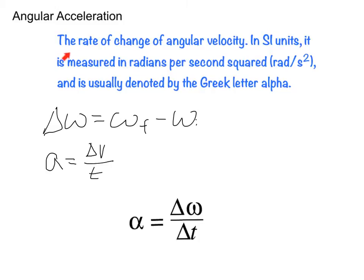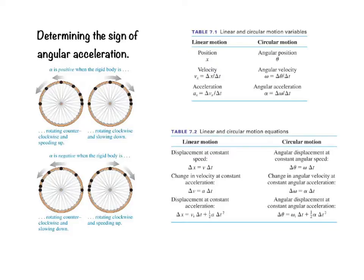Angular acceleration is the change in angular velocity over time. We use the Greek letter alpha to indicate angular acceleration. Because the units of angular velocity are in radians per second, the units of angular acceleration are in radians per second squared. An angular acceleration can be positive or negative — it depends on the direction of rotation. Angular acceleration is positive when the rigid body rotates counterclockwise and speeds up, or rotates clockwise and slows down.